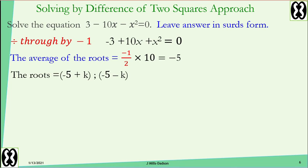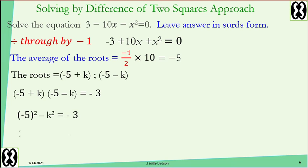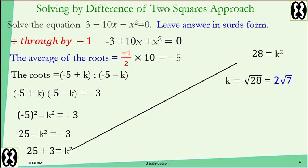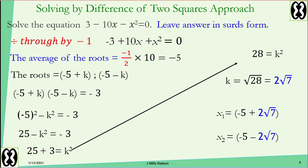Multiply the roots and set equal to the constant, negative 3. Use difference of two squares for the left-hand side: negative 5 all squared minus k squared equals negative 3. Negative 5 squared is 25. Add k squared to both sides and add 3 to both sides. You get 25 plus 3 equals 28, and the square root of 28 is 2 root 7. So k is 2 root 7. The roots are negative 5 plus 2 root 7 and negative 5 minus 2 root 7. Leave the answer in surd form.